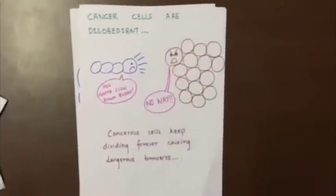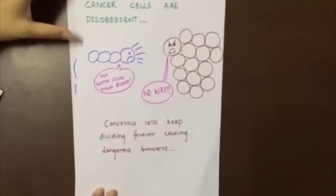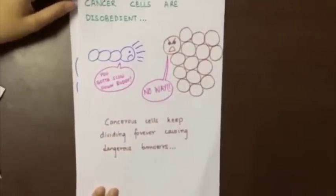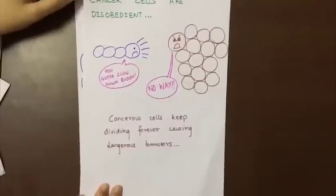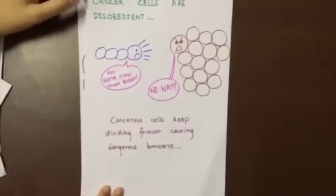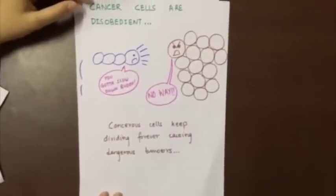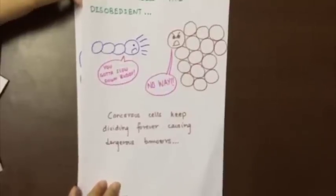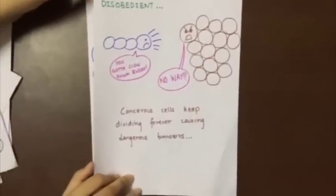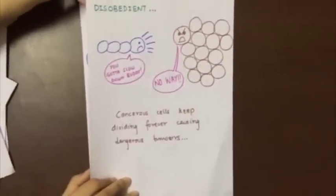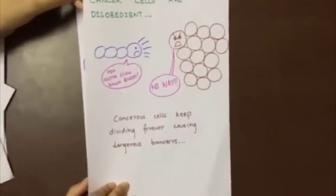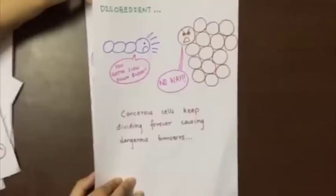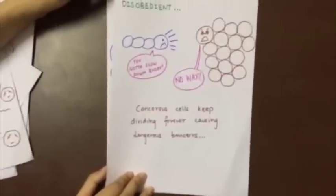Cancer cells do not do this. Cancer cells do not obey senescence — they are immortal. They completely ignore signals urging them to commit suicide, allowing them to keep growing. No matter how crowded it gets, cancer cells will keep dividing over and over again. If they have enough nutrients, they keep dividing forever. This is what causes dangerous tumors.